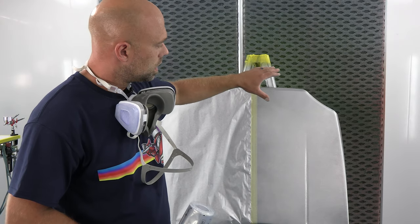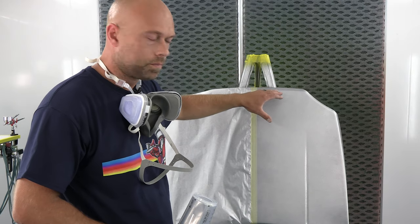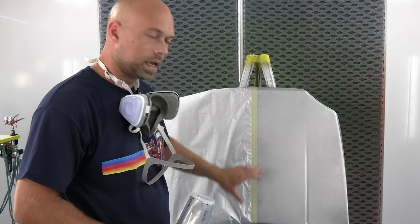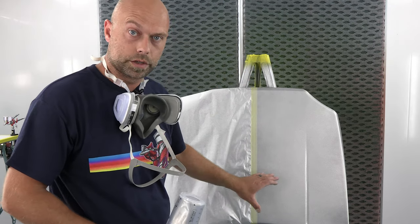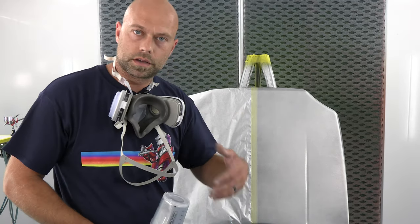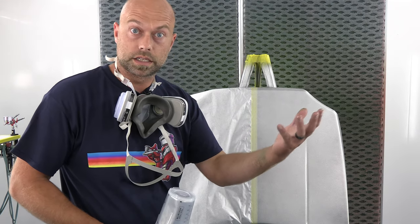So we're going to do Emerald Candy 2.0 and Cosmic Sparkle Green, and then the same Emerald Candy and Hot Rod Sparkle Green. So you'll see just the flake size gives it a different color, gives it a different look in terms of the reflection in the sun.